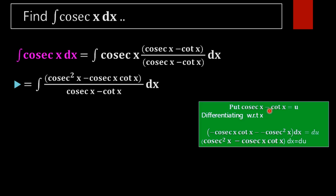Differentiating: the derivative of cosec(x) is minus cosec(x)·cot(x), and the derivative of cot(x) is minus cosec²(x), giving du = (minus cosec(x)·cot(x) + cosec²(x)) dx. We rewrite the integral using integration by substitution, so the expression becomes du/u.